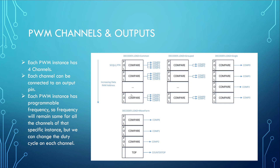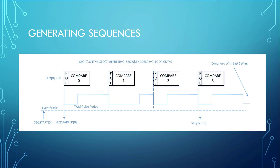Each PWM instance has four channels, each connectable to an output pin, and each instance has a programmable frequency. Sequence values are loaded into compare buffers and used to generate special waveform sequences, which can be used for various purposes.